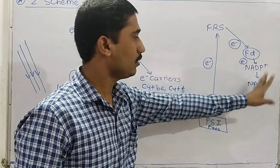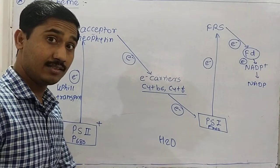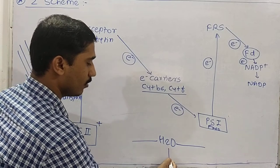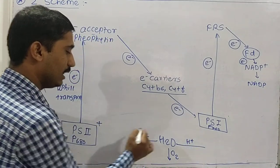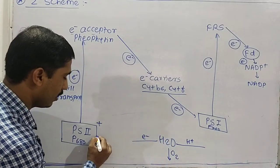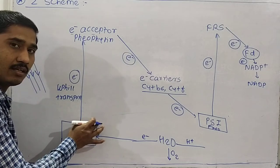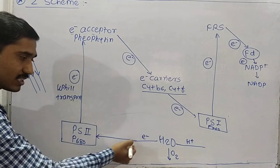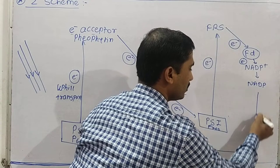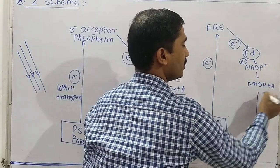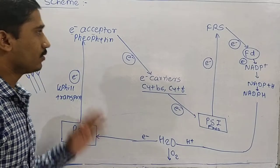Simultaneously, the water molecule undergoes photolysis. Photolysis produces three molecules: oxygen, protons (H+), and electrons. The electron from water enters PS II, which is in the ionized state, returning it to the steady state. The proton from water is transported to NADP+, and together with the electron, it produces NADPH. This is the basic Z scheme.